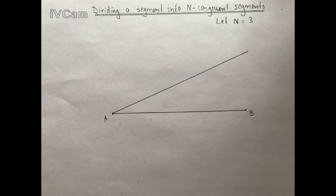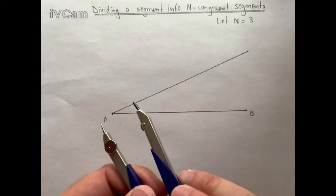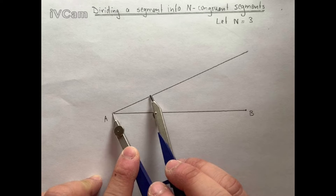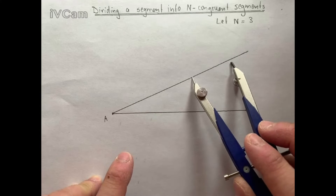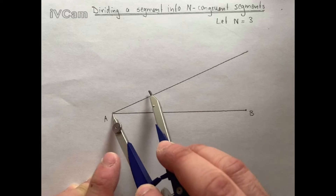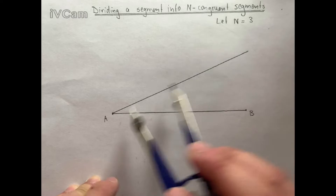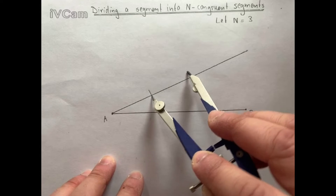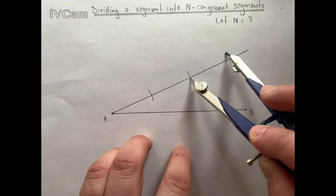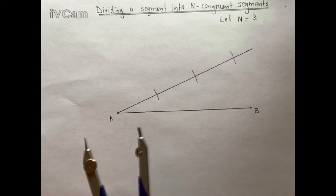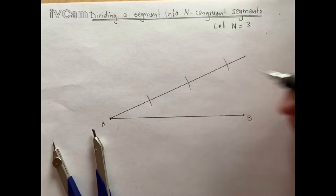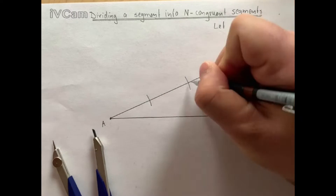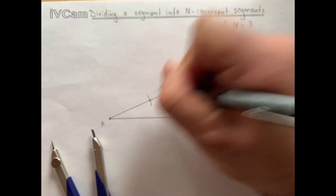After drawing this line, we'll be taking our compass and we want to draw 3 arcs on this slanted line. We want to adjust the width of the compass so that it can fit at least 3 times. It doesn't have to reach exactly to the end of this line. So let's draw the arcs: first arc, then from this arc another arc, and then from this arc another arc.